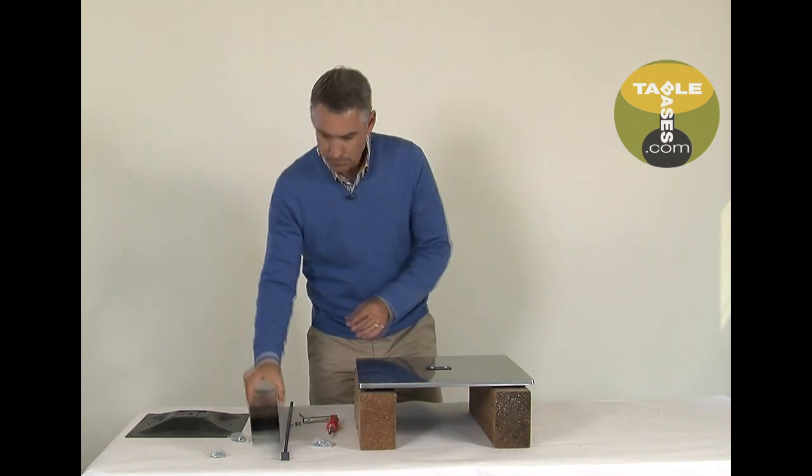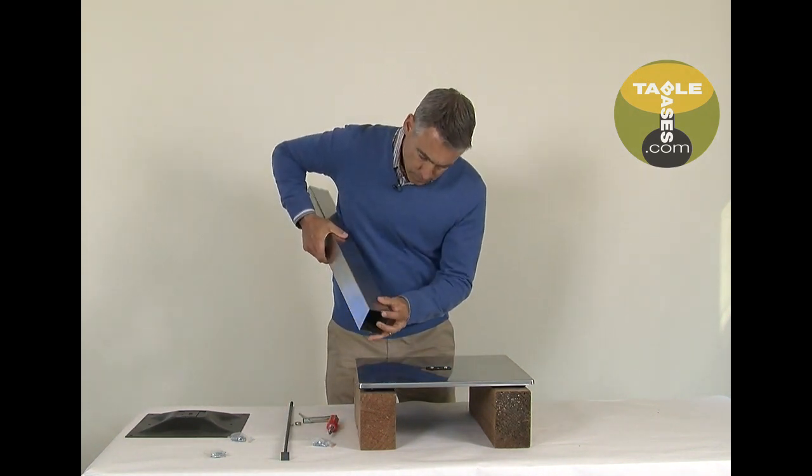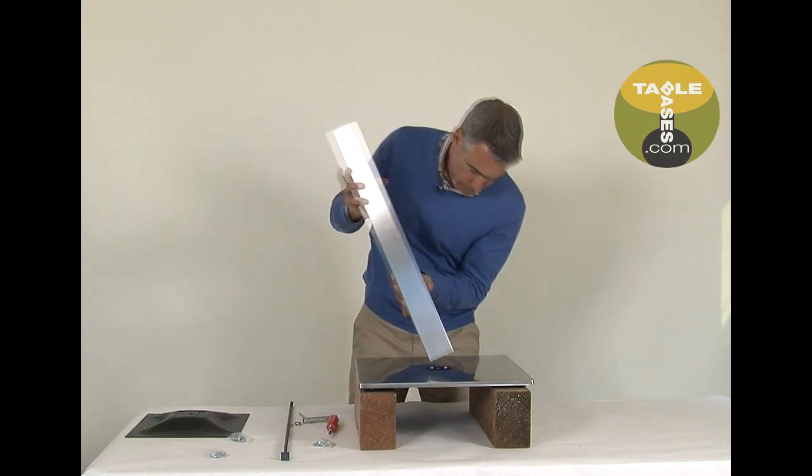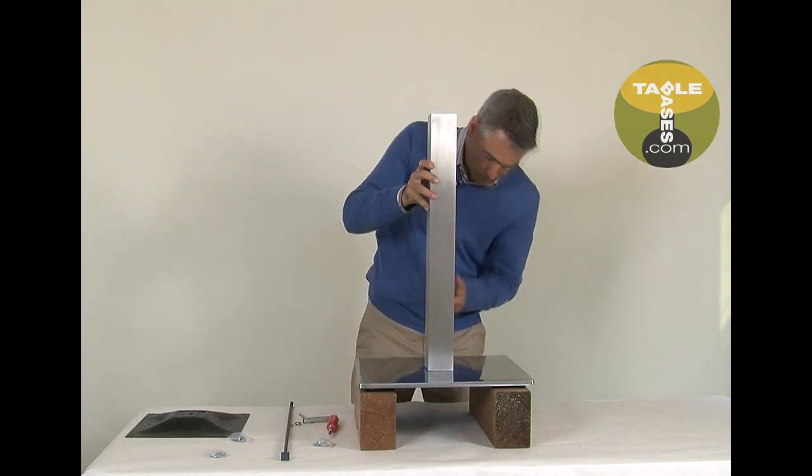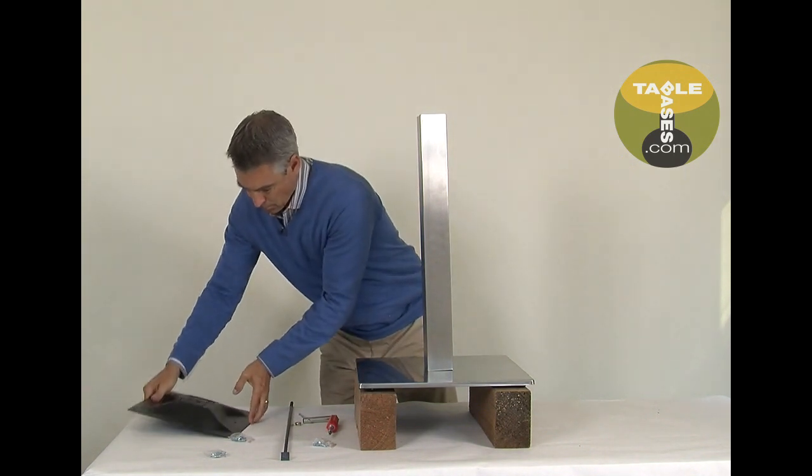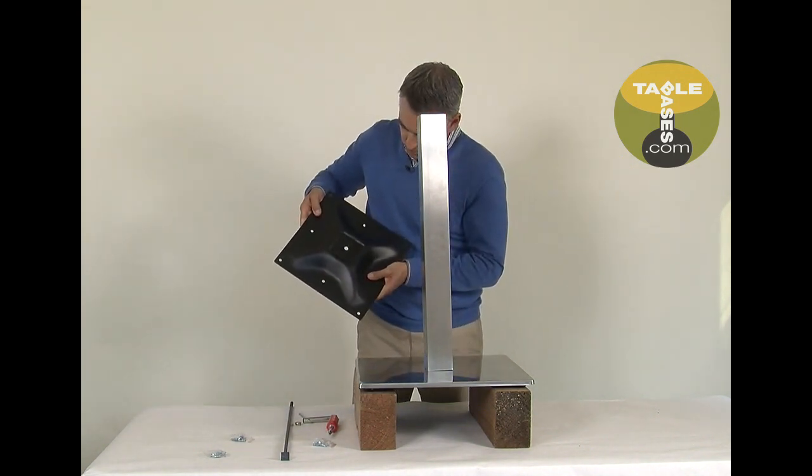Next, set the column on top of the base bottom. Take special notice to put the notches in the column over the little tabs in the retention plate. Set the mounting plate on the base bottom. This will keep the column from turning.